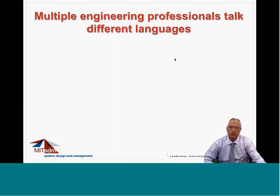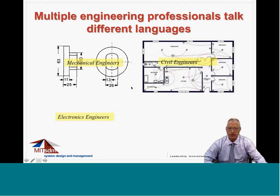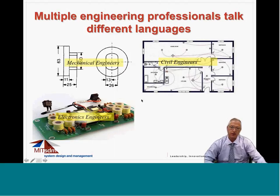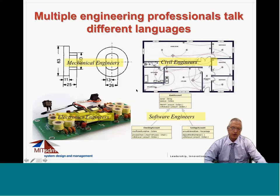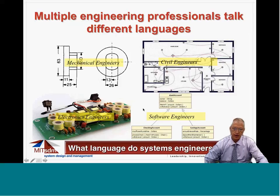As engineers, we know that any engineering discipline has their own language in which they express themselves. Mechanical engineers have machine drawings. Civil engineers have floor maps. Electronics engineers have their own set of drawings, and software engineers have models such as UML. What about systems engineers? What language do they speak?